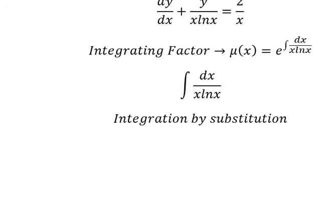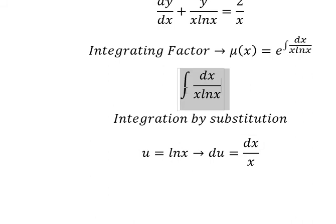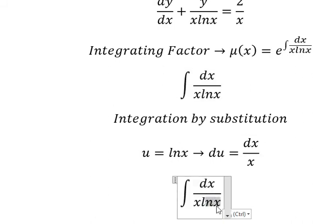I need to put u equals lnx. Later, we do the first derivative for both sides, and we have dx over x. This one we change to u, and dx over x we change to du.